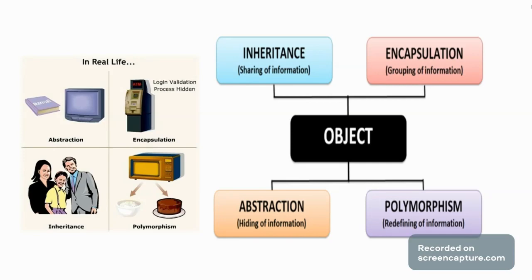In a real life example: abstraction — we abstract the data, for example manuals in the computer, that is abstraction. Encapsulation — we have a hidden password, that is encapsulation. Inheritance — parents and child share some features, that is basically inheritance. Polymorphism — there is a microwave with multiple features: we can do baking, we can do food. That is polymorphism.